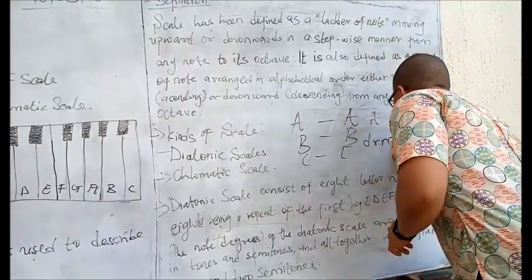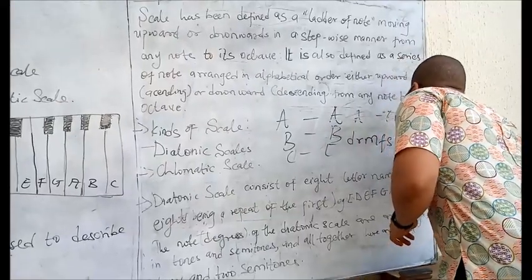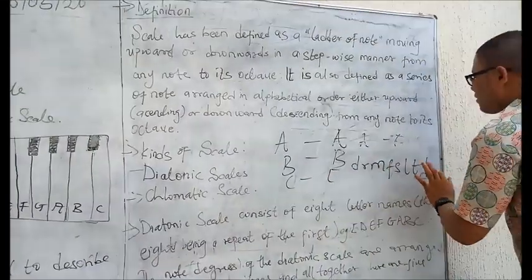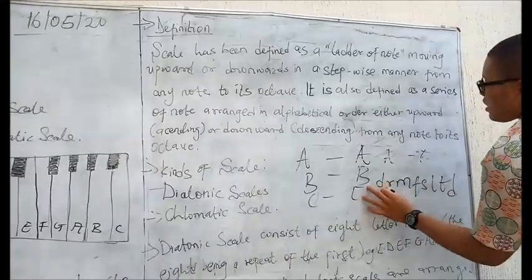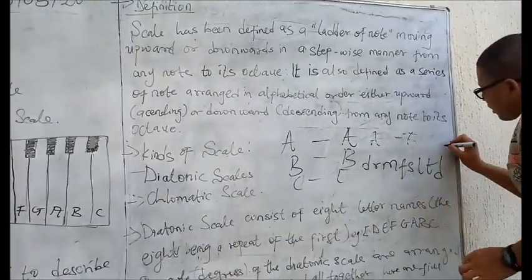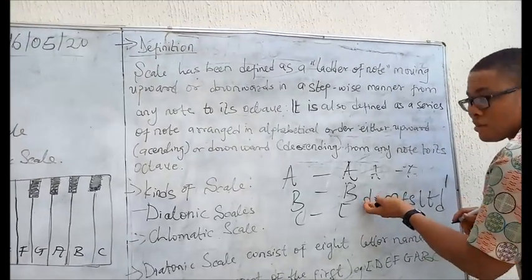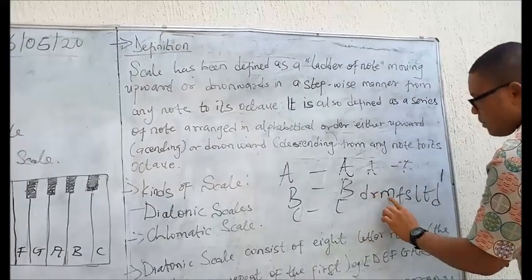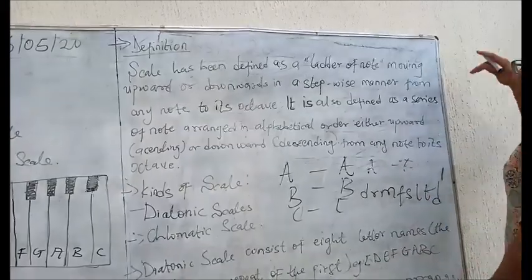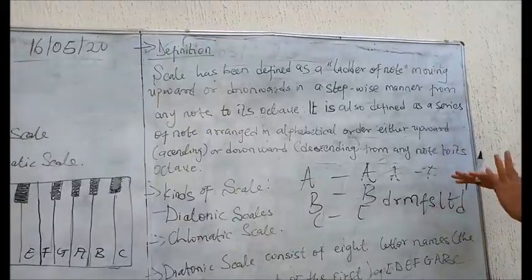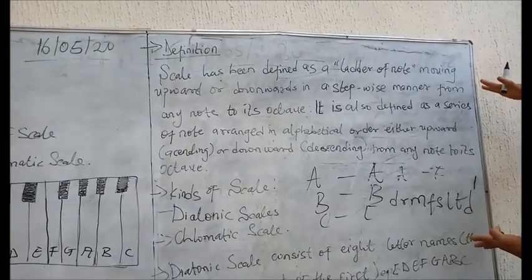Let me demonstrate it with the solfa: do, re, mi, fa, sol, la, ti, do. You see that this is 1, 2, 3, 4, 5, 6, 7, 8. And this do is being repeated here in the octave but in the higher pitch. Do, re, mi, fa, sol, la, ti, do. It is the repetition of the first one but in the highest tone.